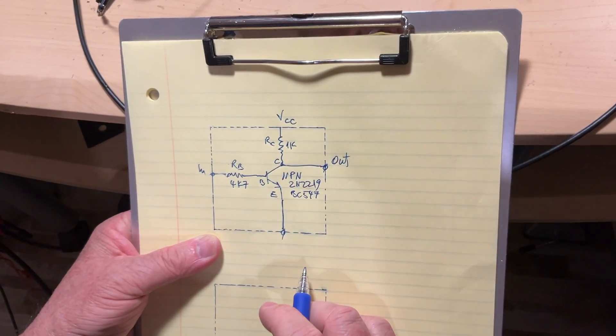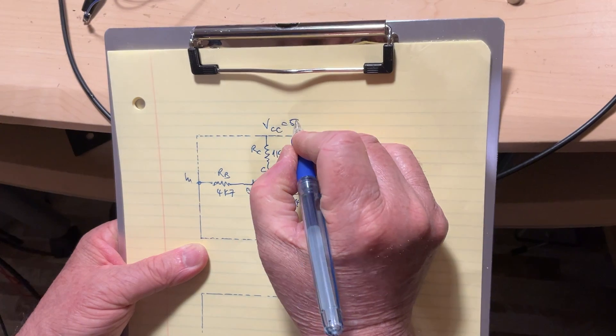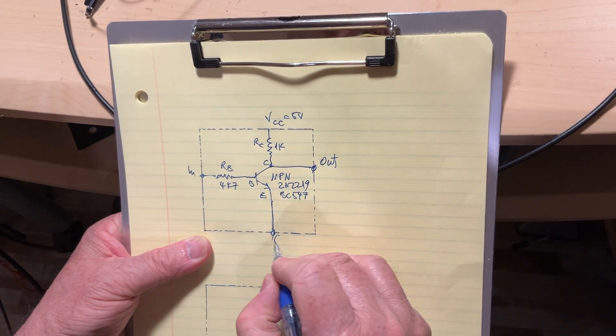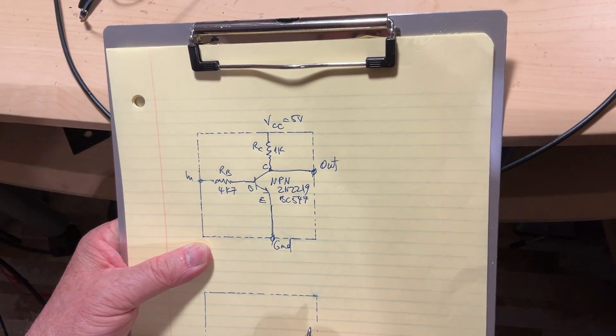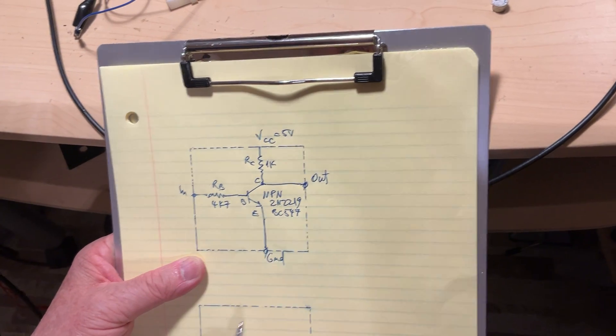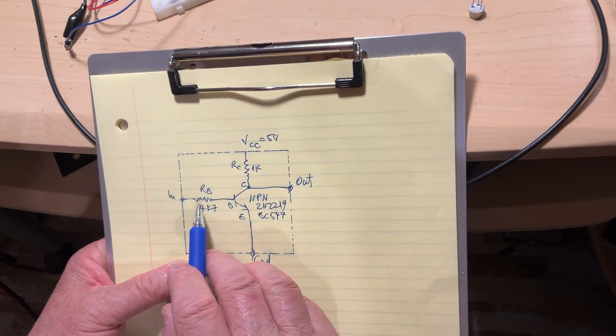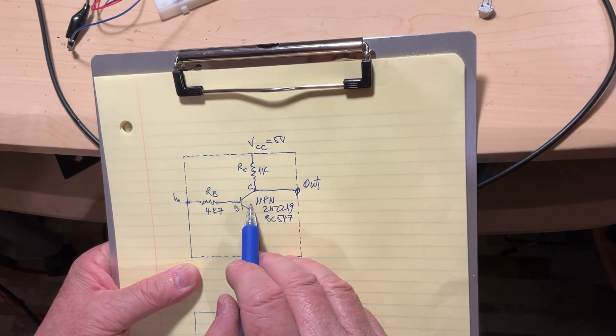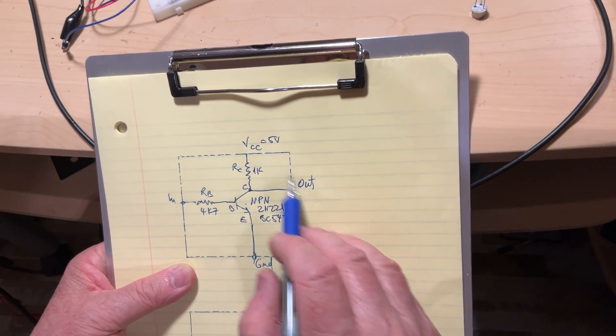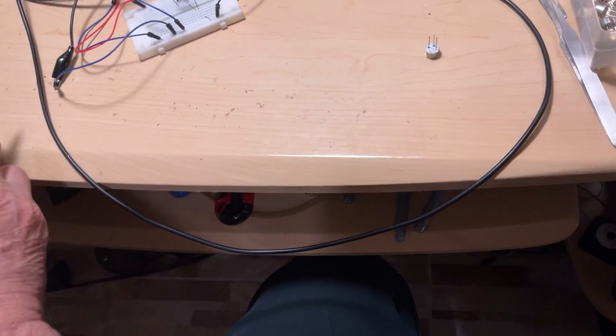It's an NPN type, any kind of NPN you have at hand. Mine is 2N2219, it may be as well BC547. Here is the resistor coming into the base, here is the collector, here is the emitter. Let's give them some values: 4.7kΩ, 1kΩ here. In the top we have the power supply which is going to be 5V. Here is the ground. That's it.